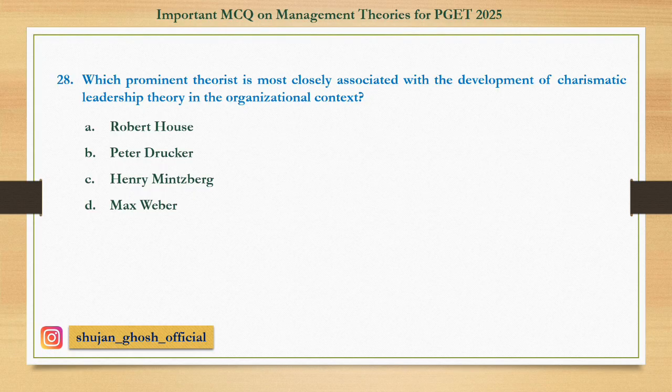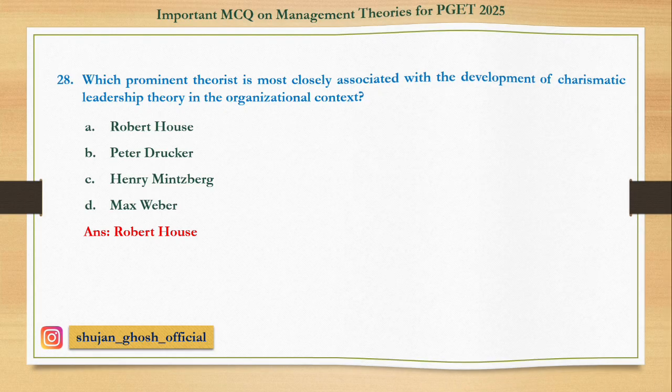Question 28: Which prominent theorist is most closely associated with the development of charismatic leadership theory in the organizational context? Option A: Robert House. B: Peter Drucker. C: Henry Mintzberg. D: Max Weber. Answer is Robert House.